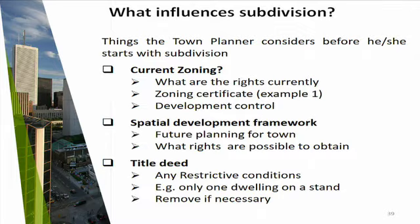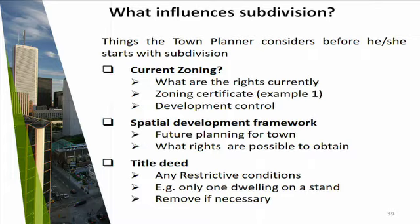The town planner will look at the same three factors to determine whether this will be a favorable subdivision: the current zoning, the spatial development plan for the area, and your title deed. In certain areas, for example, they won't allow a subdivision where after subdivision your erf is smaller than a specific minimum — say, if they don't allow any subdivisions smaller than 600 square metres, your subdivision will not be approved. And if there's a restrictive condition in the title deed, that condition must be dealt with during the subdivision process.